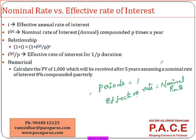For example, if I am talking about a monthly interest rate — the monthly effective rate M and monthly nominal rate M — if I am looking at only a one-month period, the monthly nominal rate will be the same as the monthly effective rate.